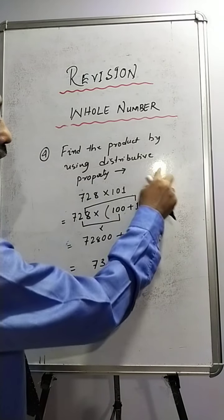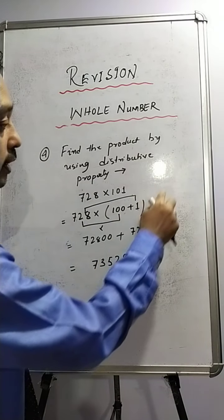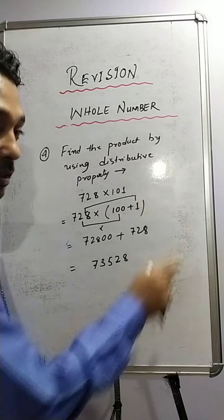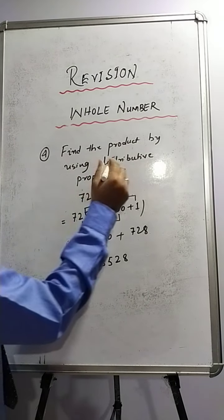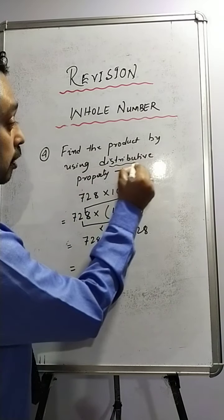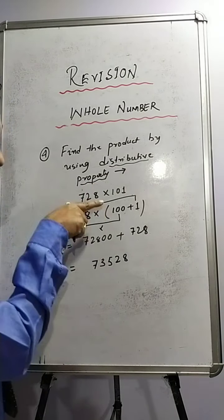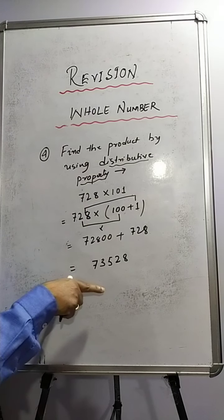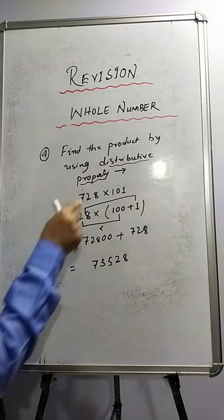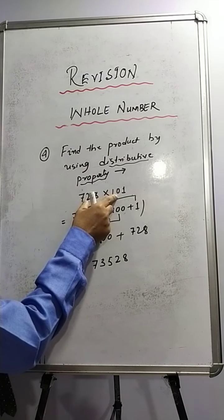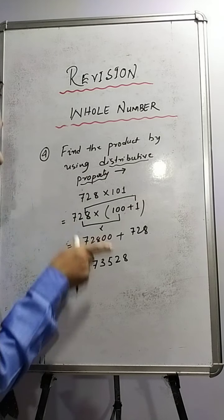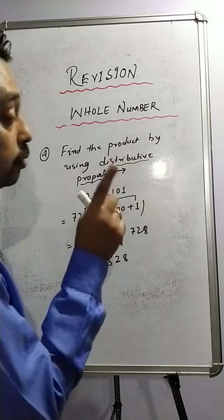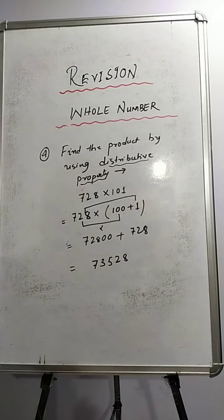Do not multiply directly. If you do that, there will be a deduction of marks — you will not get full marks. If the question carries 2 marks, you will get only half marks. When it is written that you must use distributive property, you have to follow this process and not do direct multiplication.